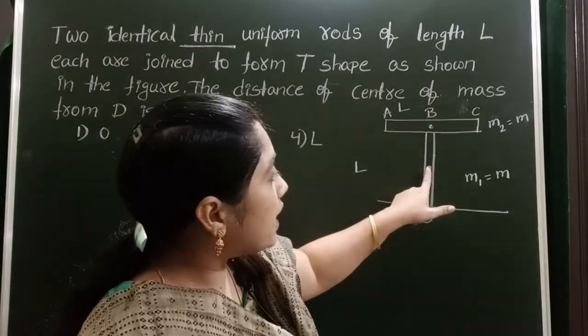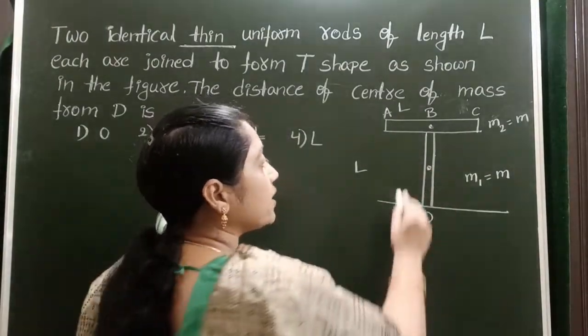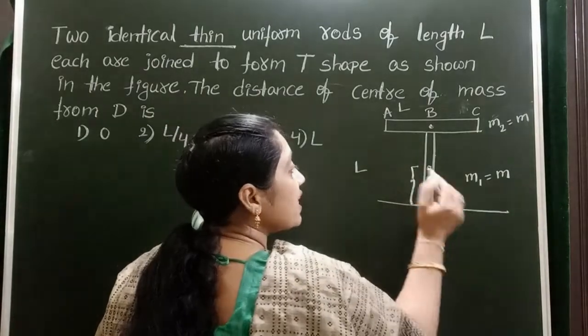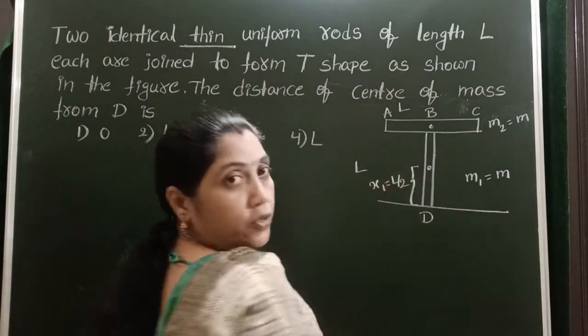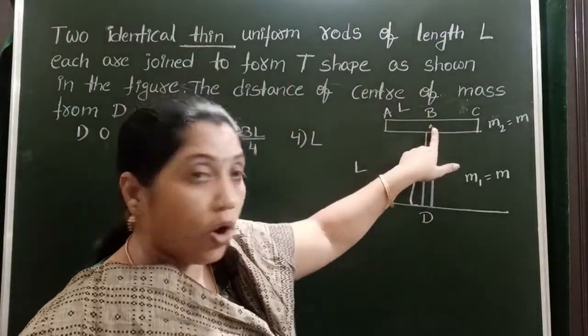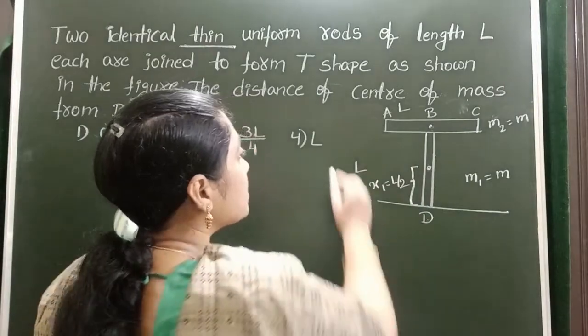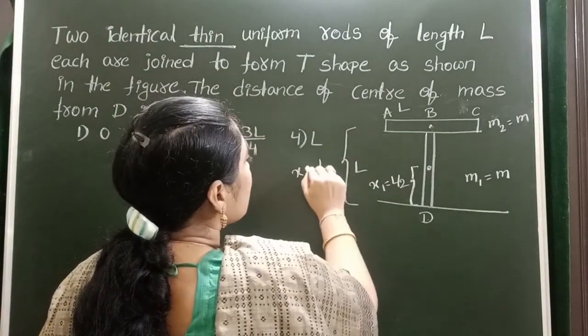Now the distance of center of mass of the first rod from point D is L by 2, so X1 equals L by 2. The distance of center of mass of the second rod from point D is L, so X2 equals L.